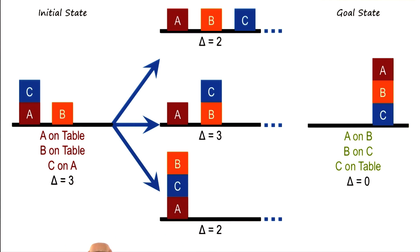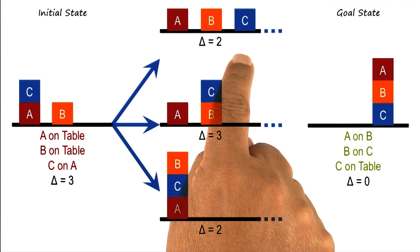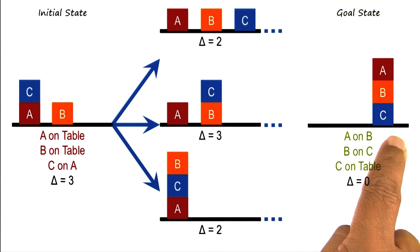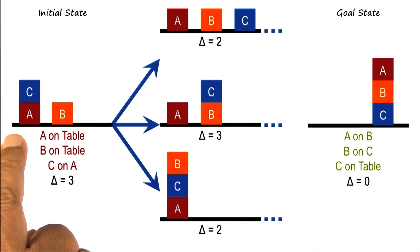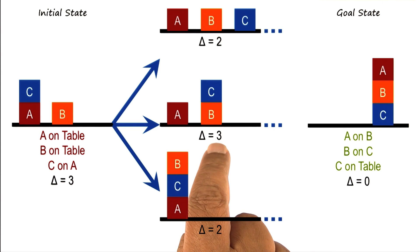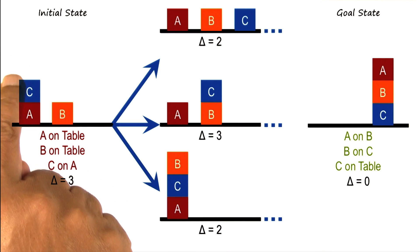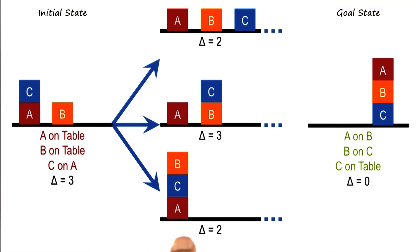Here we have a number of operations available to us—nine operations in particular. Let us do a means-end analysis. We can apply an operator that will put C on the table, in which case the difference between the new state and the goal state will be two. We could apply an operator that will put C on top of B; in that case, the distance between the current state and the goal state will still be three. Or we can apply the operator of putting B on top of C, in which case the distance between the current state and the goal state will be two.